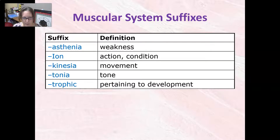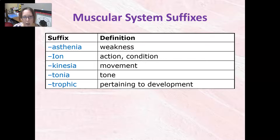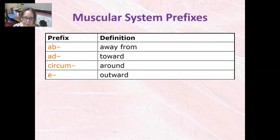For the suffixes, we have -asthenia which means weakness — we'll see that in one of the pathology terms. We have -ion which means action or condition, -kinesia which means movement, -tonia which means tone, and -trophic which means pertaining to development.